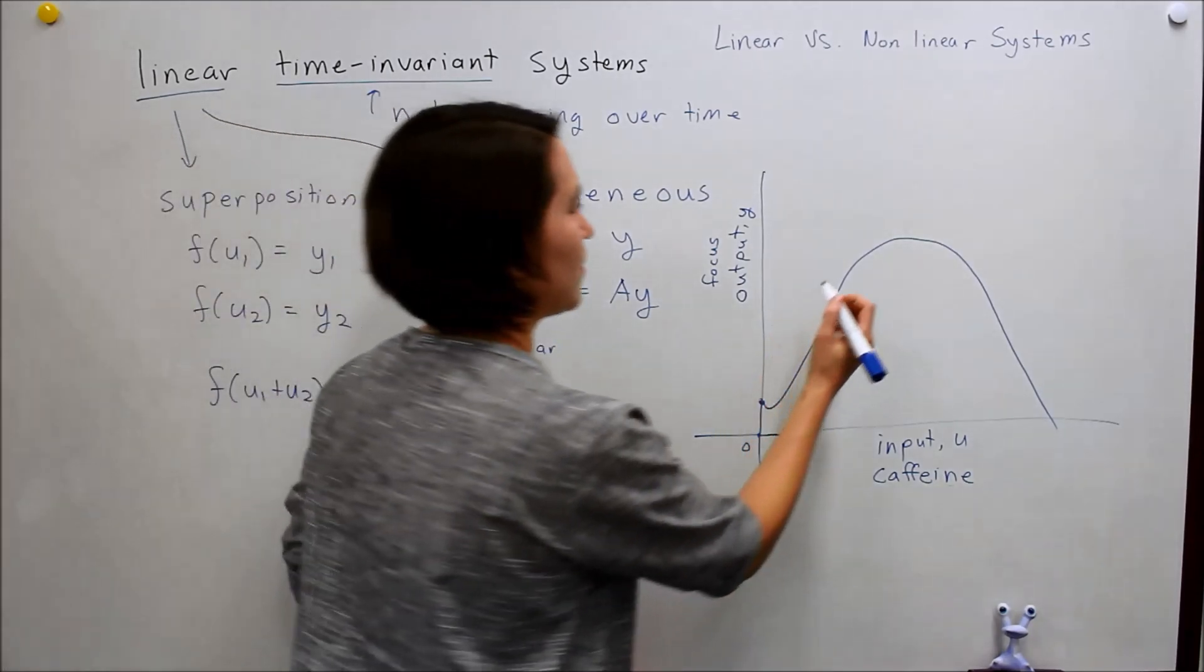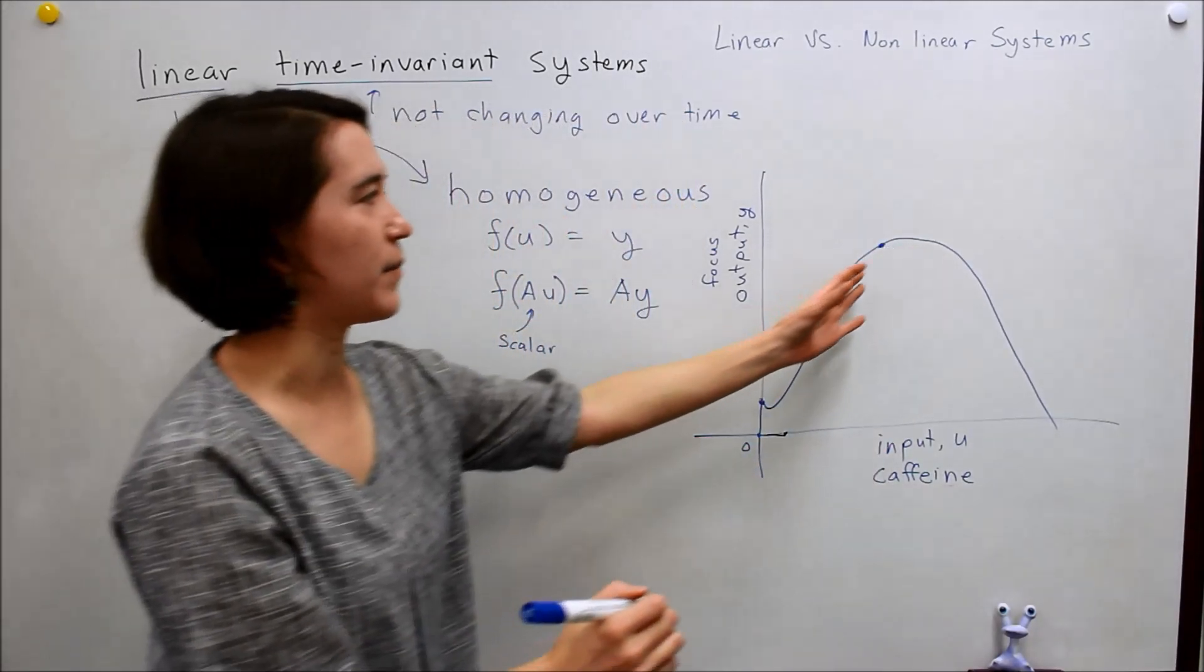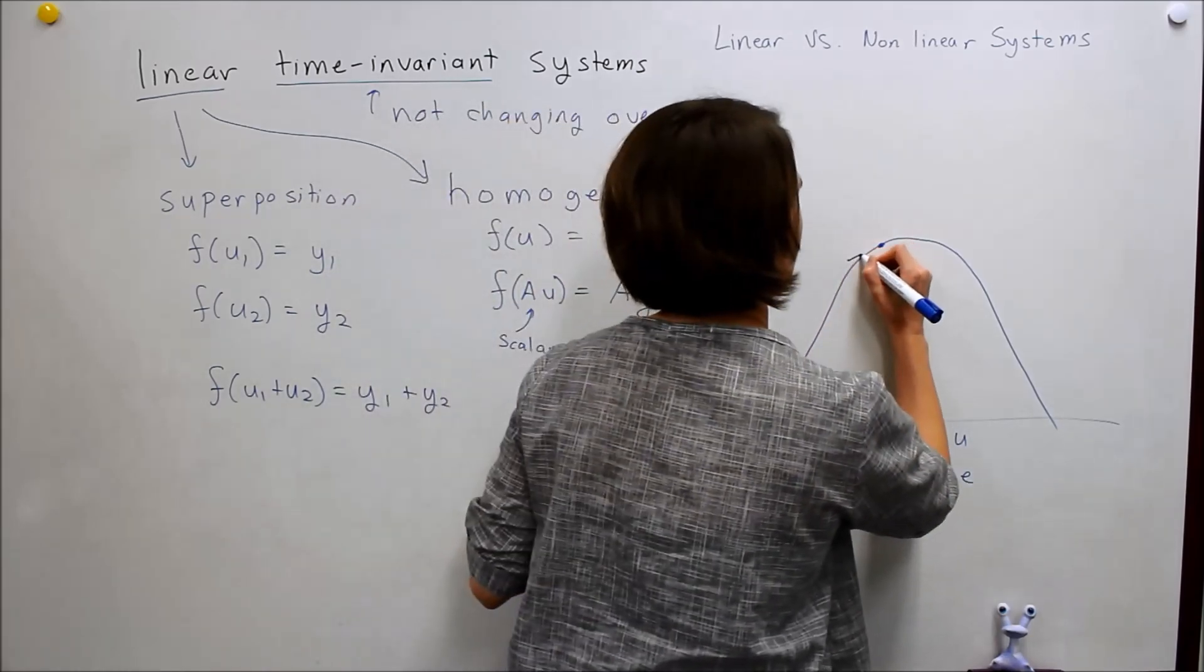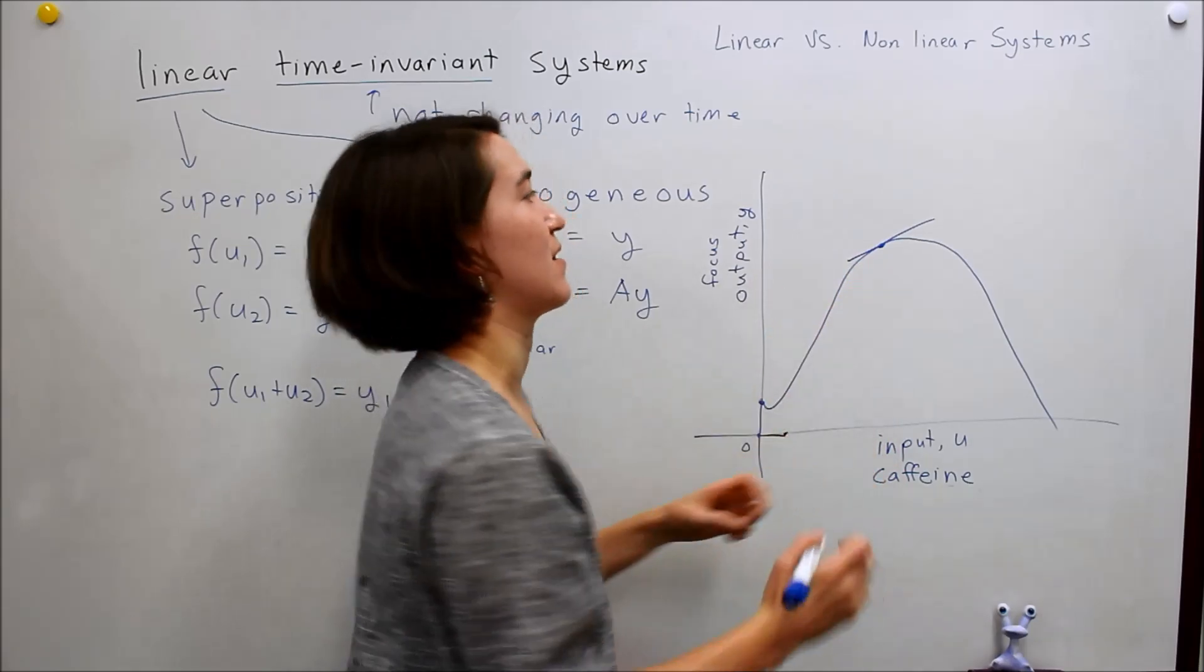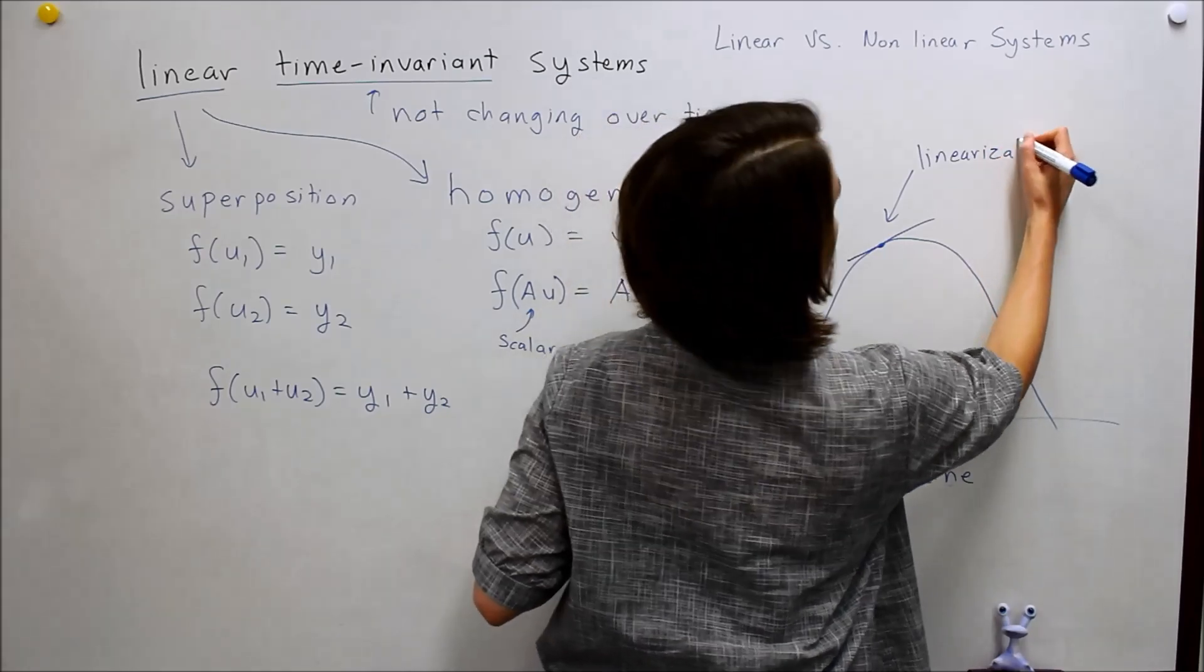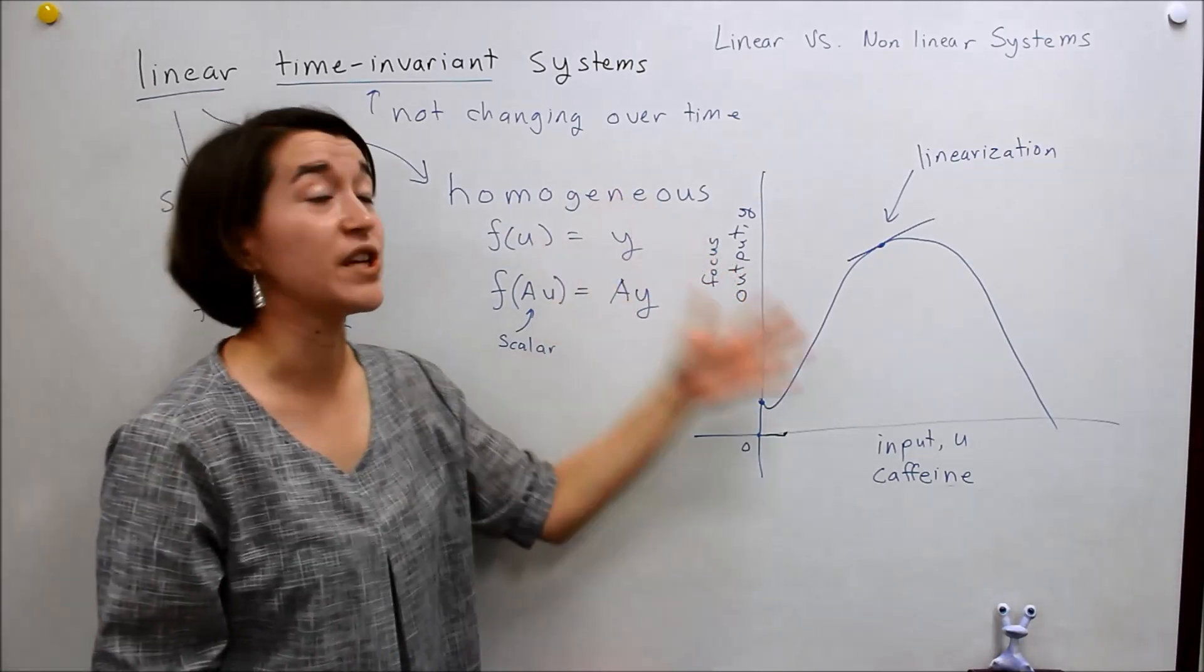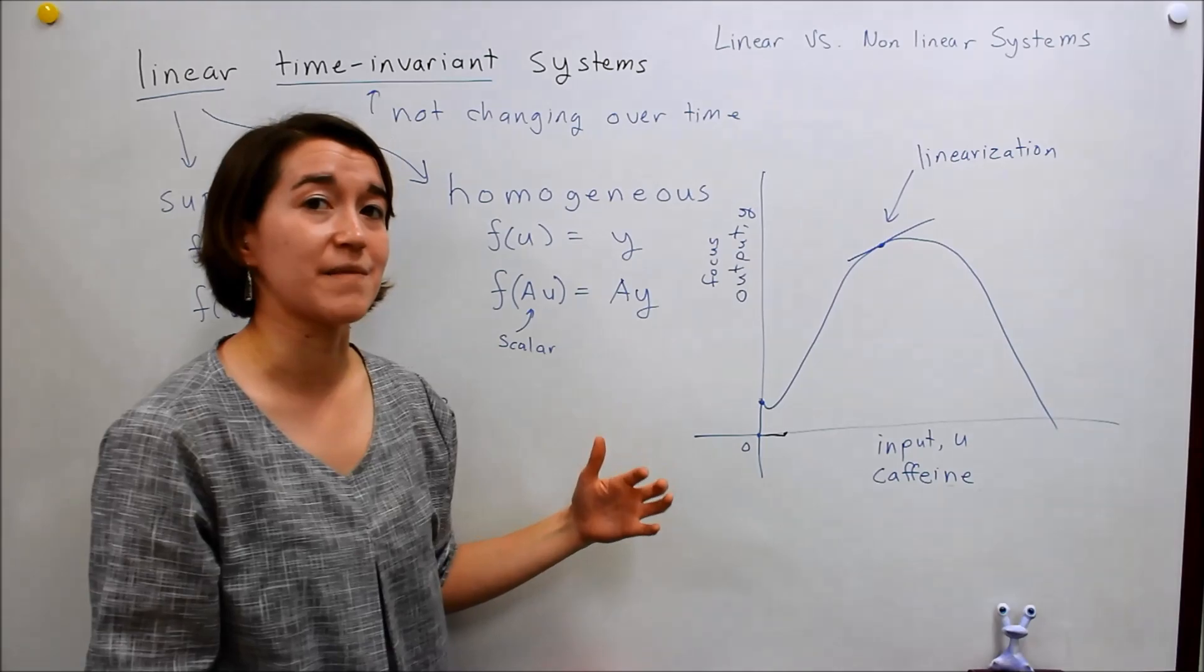Well, what we'll learn how to do is to look at a certain operating point. So, find a place where we want to examine further, and we'll actually work on forcing the system to be a linear system. So, we call this linearization. So, the next couple parts we'll be looking at how to linearize a non-linear system so that we can do some more analysis on it.